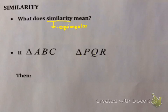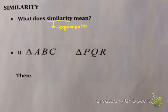Similarity means that your shapes are equi-angular. What does that mean? It means that whatever shape you have, every angle in the one shape has an equal partner in the other shape. Note that equi-angular does not mean all the angles are equal — each shape has an equal partner in the shape that it's similar to.